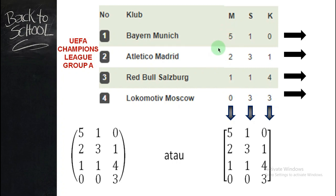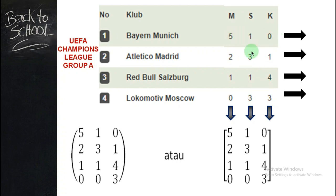Untuk 1, 3, 1, 3 — kolom yang kedua — merupakan hasil seri keempat klub pada grup A. Untuk penulisan 5, 1, 0, 2, 3, 1, saya tuang dalam bentuk matriks. Perhatikan ada kurung biasa atau kurung siku.